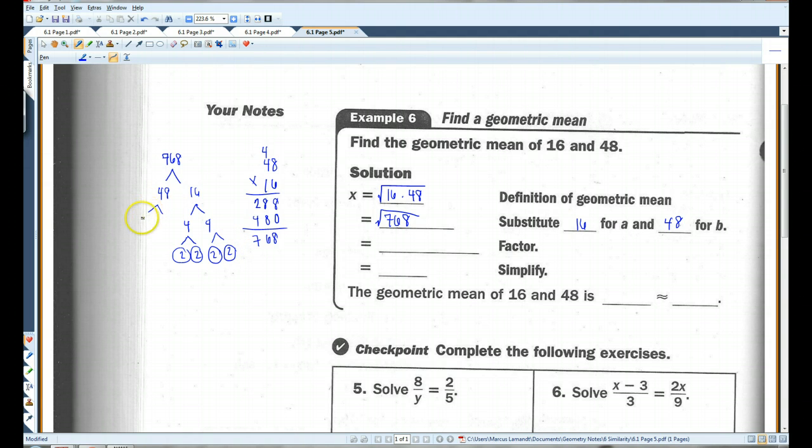48, that's 6 times 8. 3 times 2. And 8 is, of course, 2 times 2 times 2. So we're going to look for pairs. We got one 2, another 2, another 2, another 2. And I'm left with a 3 inside the square root. 2 times 2 is 4, times 2 is 8, times 2 is 16. So I've got 16 root 3.